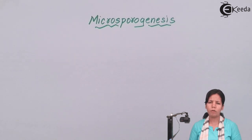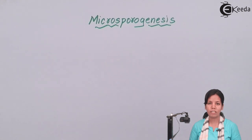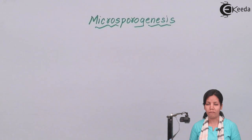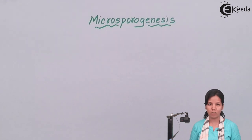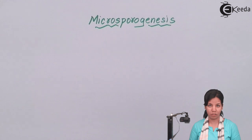Now, what will be going on — mitosis or meiosis during this process? Obviously it is the process of gamete formation, and when it is a process of gamete formation, meiosis has to be taking place at each step.